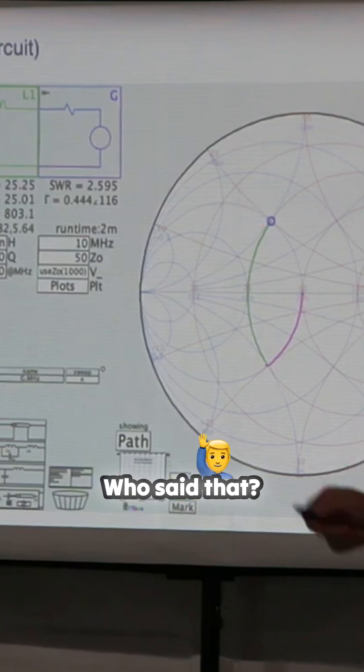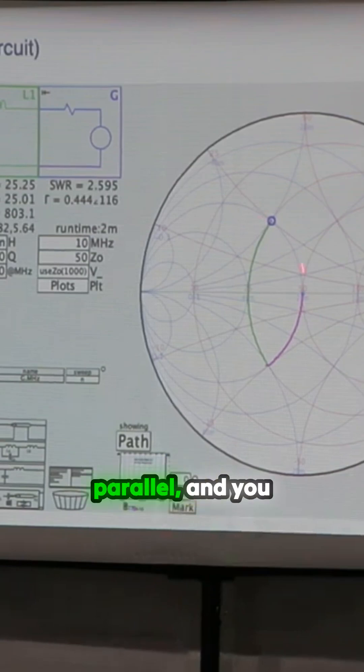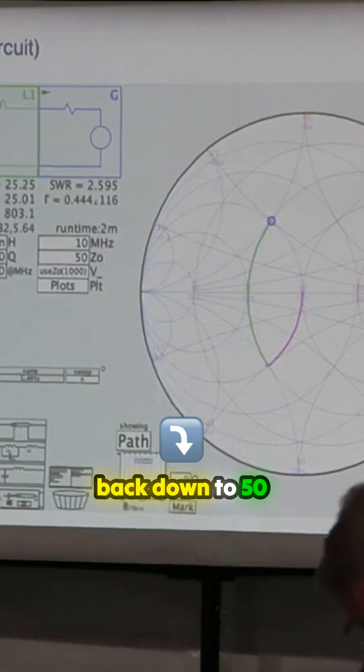I'd have to add a capacitor. Who said that? You've been through. Anyway, you would add a capacitor in parallel and you would be able to bring this right back down to 50 ohms.